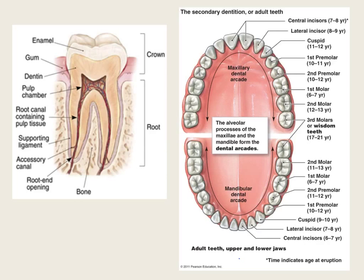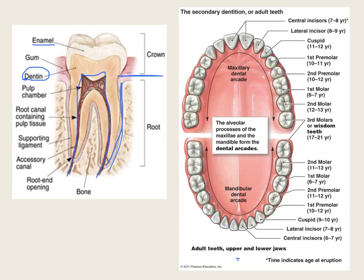Along with enamel on the outside, the next layer down is dentin, very similar to bone — essentially a bone coated with a harder substance. The center part of the tooth has the blood system and nerves, known as the root canal. When a dentist does a root canal they are destroying the nerves in that part of the tooth. The part above the gum line is the crown, and below the gum line is the root. The teeth sit in an immovable joint in the bone, held by ligaments.